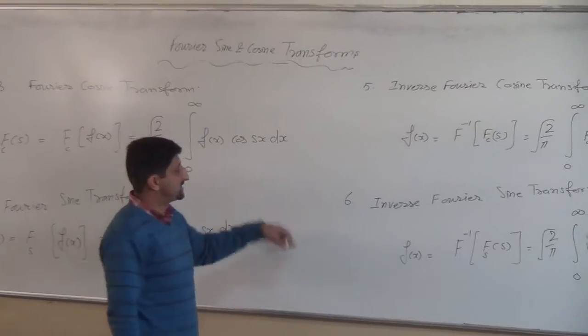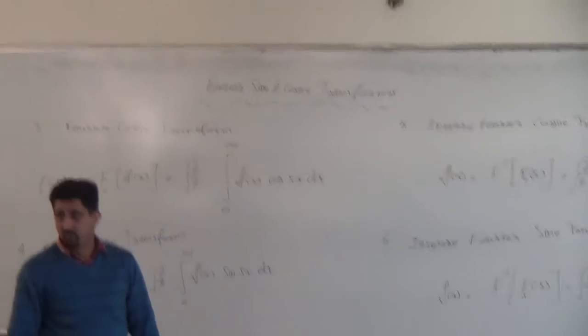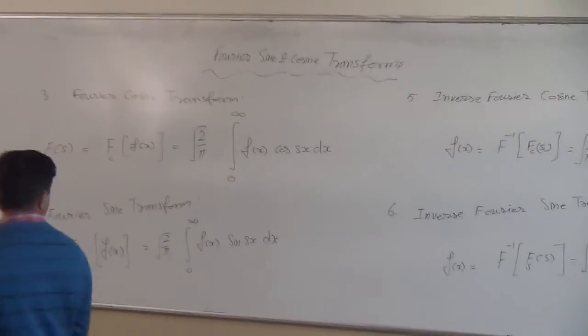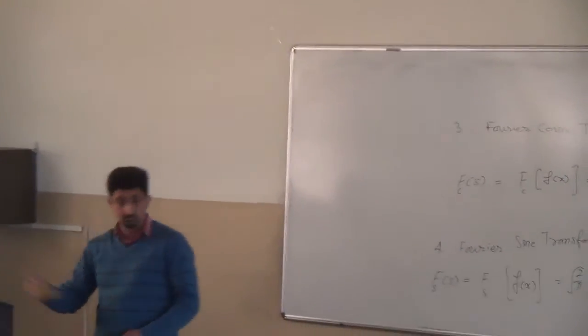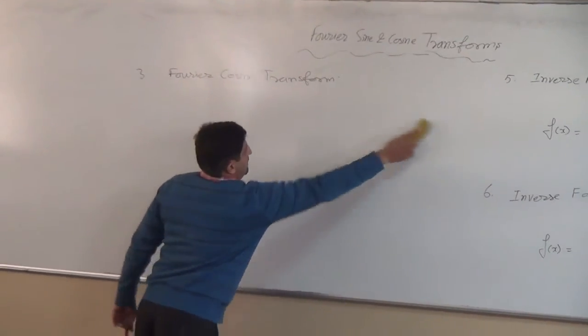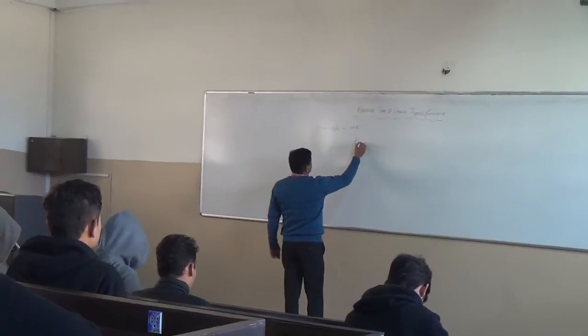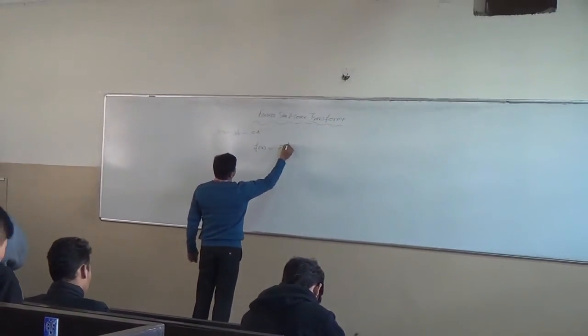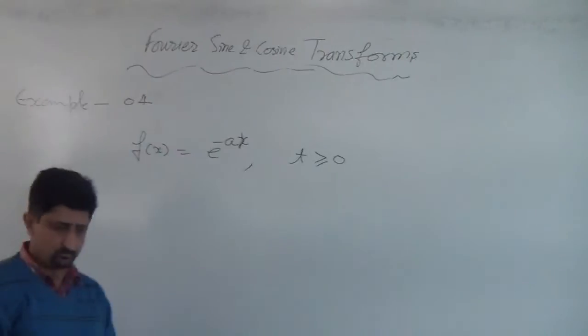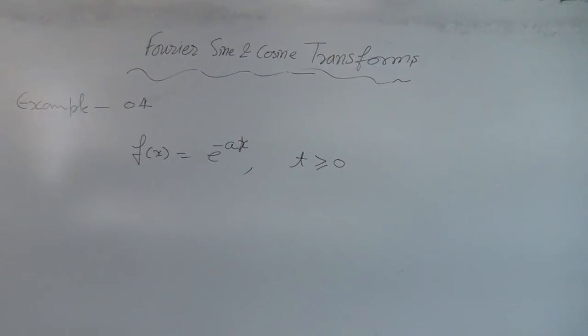So these are the next four formulas that we need to learn and then try to implement these formulas out of the problems related to sine and cosine transform. Let's start with an example. The function f(x) equals e^(-ax), x greater than or equal to zero. A kind of exponential signal, a signal which decays exponentially.